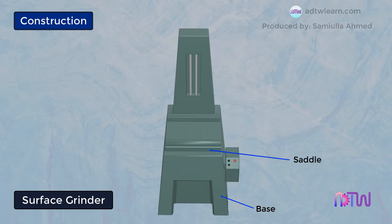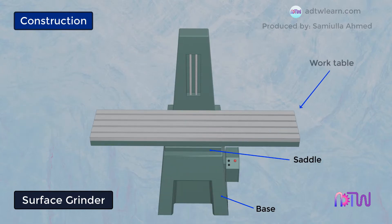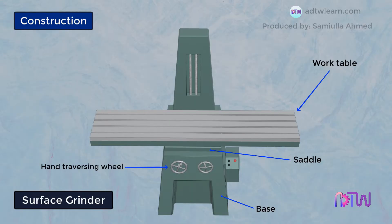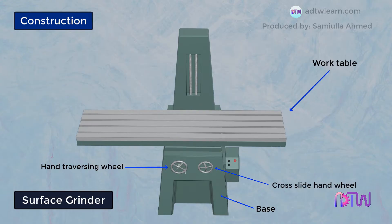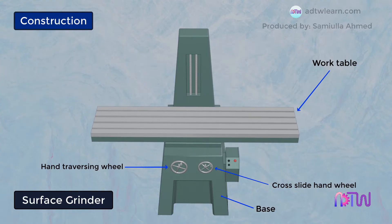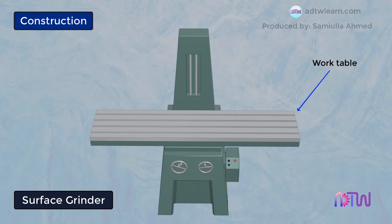There is a saddle connected to the base over which the work table is placed. Two hand wheels are provided: a hand traversing wheel and a cross slide hand wheel. The hand traversing wheel gives motion to the table in the longitudinal direction, whereas the cross slide hand wheel provides crosswise motion to the work table.